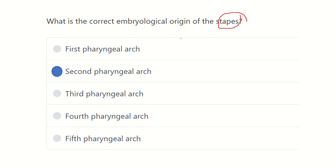Our final answer is that the stapes is derived from the second pharyngeal arch. The stapes is also the smallest bone in the body. The other two middle ear cavity bones, the malleus and incus, are derived from the first pharyngeal arch. Thank you all.